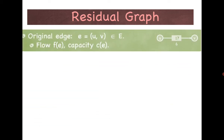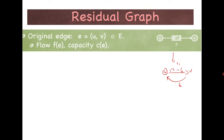Before that, let us introduce two concepts: augmenting path and the residual graph. In the residual graph, given a flow network with some flow — say value 20 — for each edge, let's say edge uv with capacity 17 and flow 6, we draw a new graph called the residual graph. We replace each edge as follows: u to v gets capacity 17 minus 6 equals 11, because 6 has already passed. And we add a reverse edge with capacity 6.